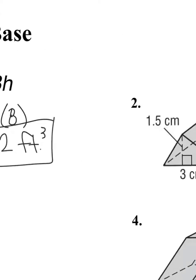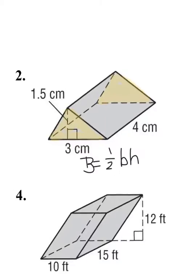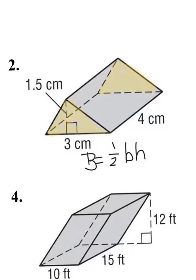For question number two, we have a triangular prism. I'm going to highlight the base — I chose the triangular faces since they're across from each other and connected. The area of a triangle is one half base times height. In this picture, the base and height of the triangle are already given: the base is 3 and the height is 1.5.